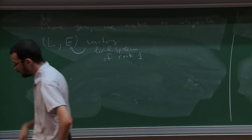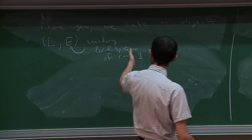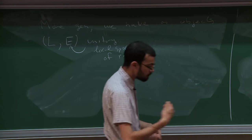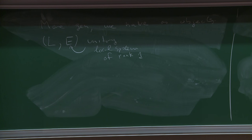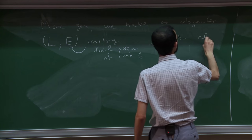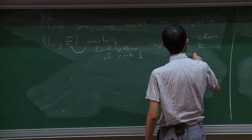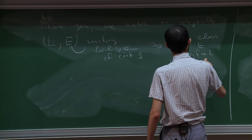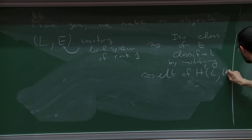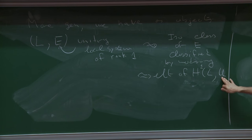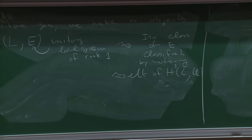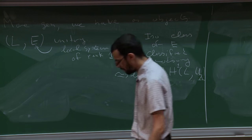I think, essentially, if you look at what's written in the literature, it's only of rank one. So I'll just impose this here, even though it's fairly straightforward to generalize to the higher rank case. So what does it mean to have a unitary local system? A local system is a rank one vector bundle over your space, and in addition you have some data of parallel transport. Parallel transport maps only depend on the homotopy class of paths. So this is classified — the isomorphism class of E is classified by the monodromy.